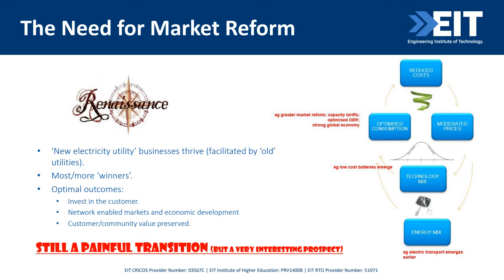On the other side — the reduced cost case — there is again a greater market response, reformed capacity tariffs, optimized DER, and a strong global economy. The cost of batteries is going down. The network is becoming an interconnection business, so you need to get the market right and get the market signals right. You need to find what incentives and behaviors will benefit all, and you have to find what new utilities are emerging, facilitated by the old ones.